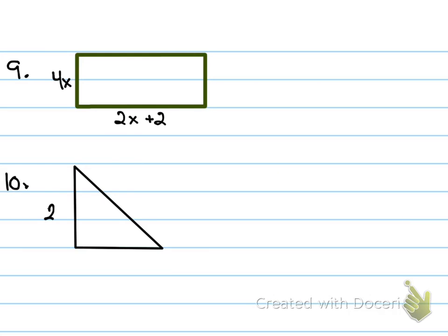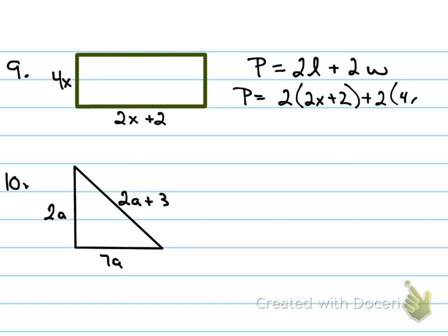Now, you have two of these on your test tomorrow where you have to find the perimeter of a rectangle and the perimeter of a triangle. Use your formulas to find the perimeter. Go. Okay, say the formula with me. P equals 2 times the length plus 2 times the width. So make your substitutions. The length and the width need to be inside the parentheses. Now what do you have to do?